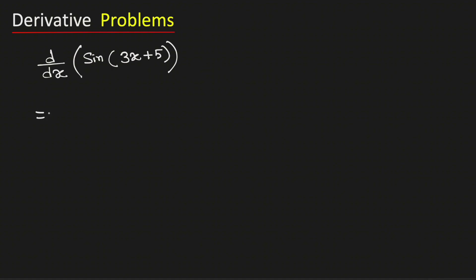We know that the derivative of sine is cos and we need to write the inside function which is 3x plus 5.